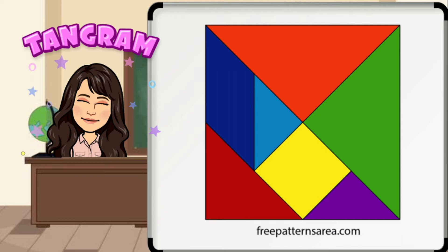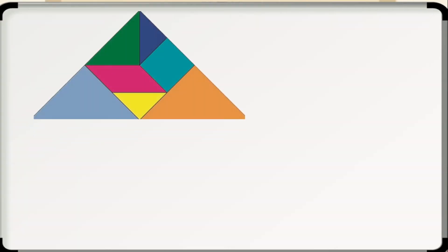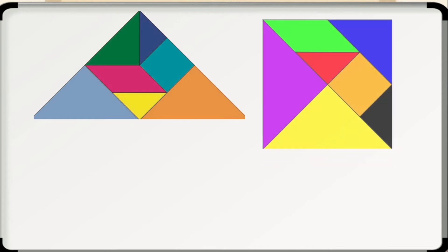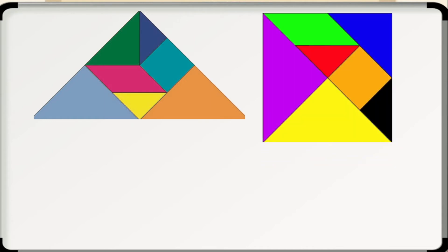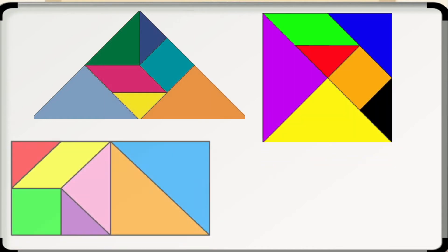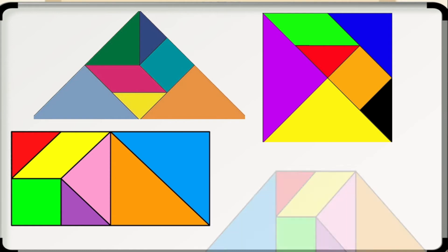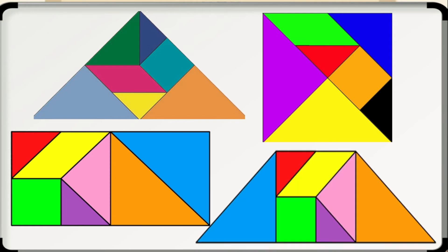Now, using all the pieces of tangrams, create the following within three minutes. First, the triangle. Second, the square. Third, the rectangle. And fourth, the trapezoid. Your three minutes start now.